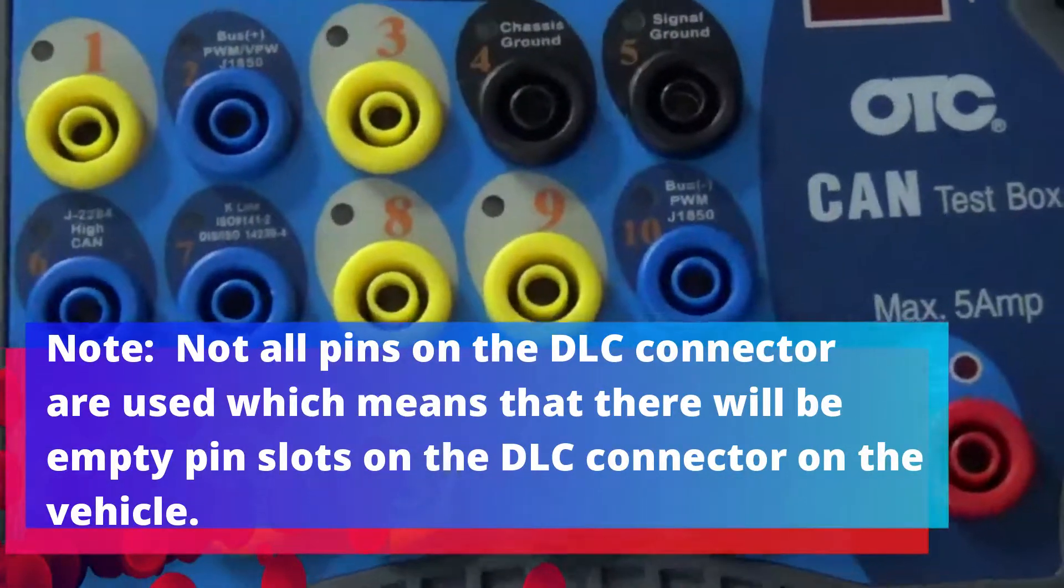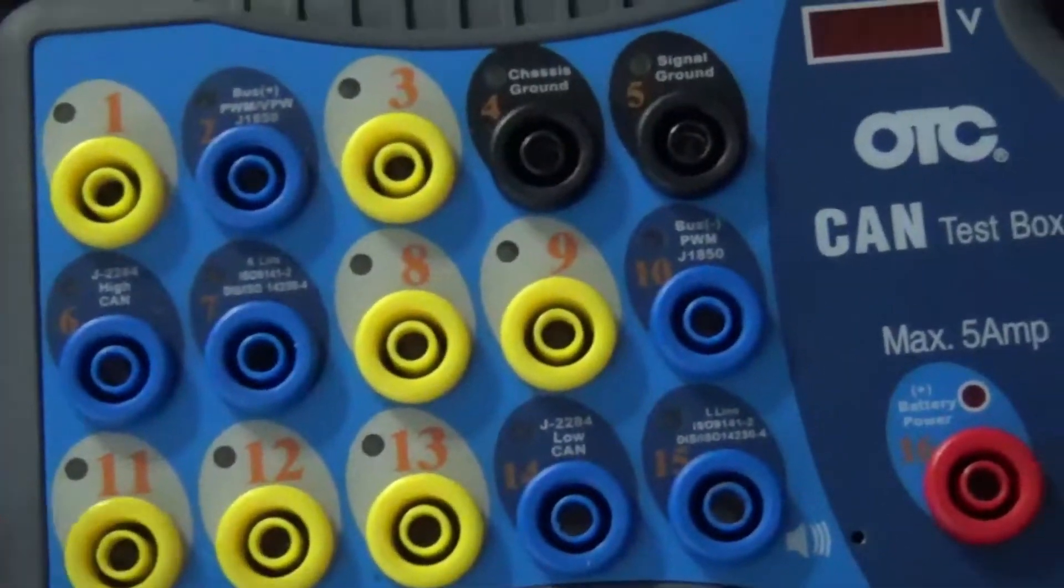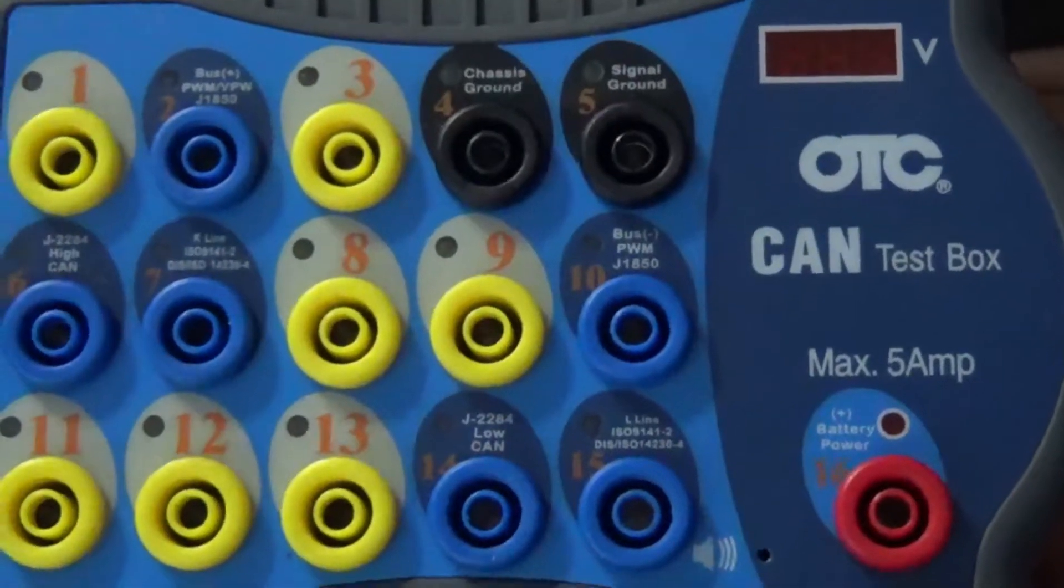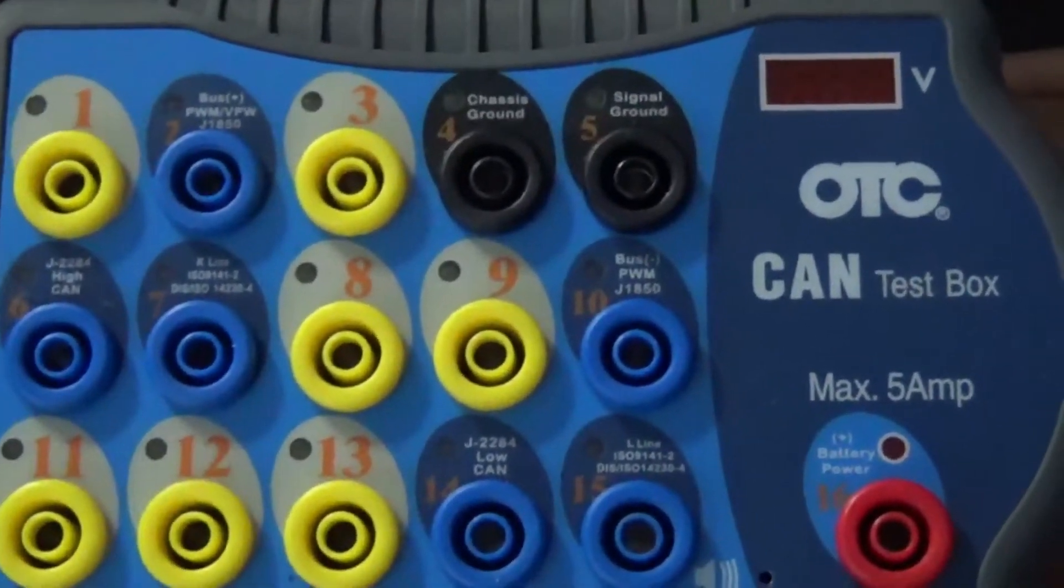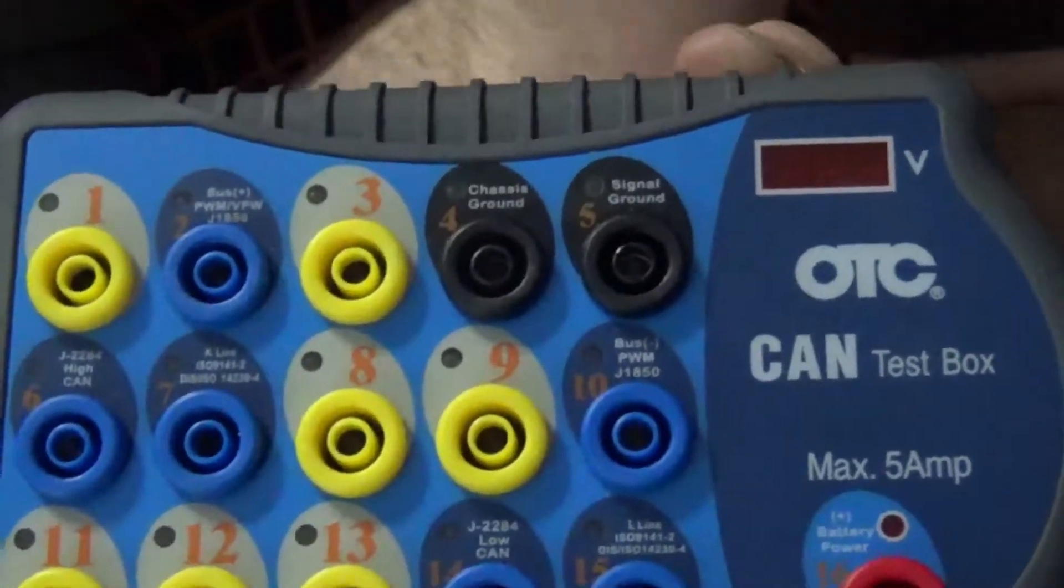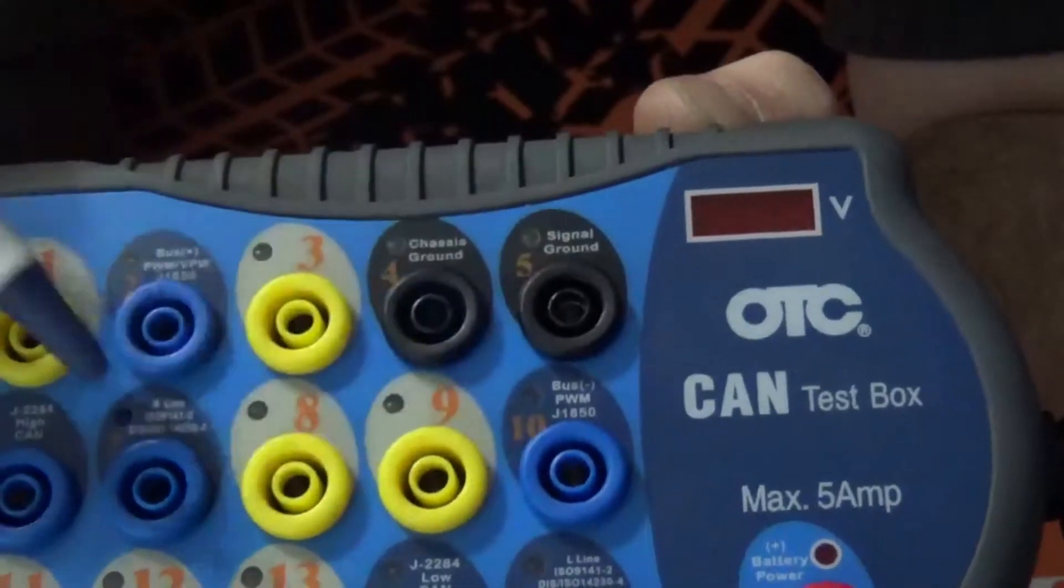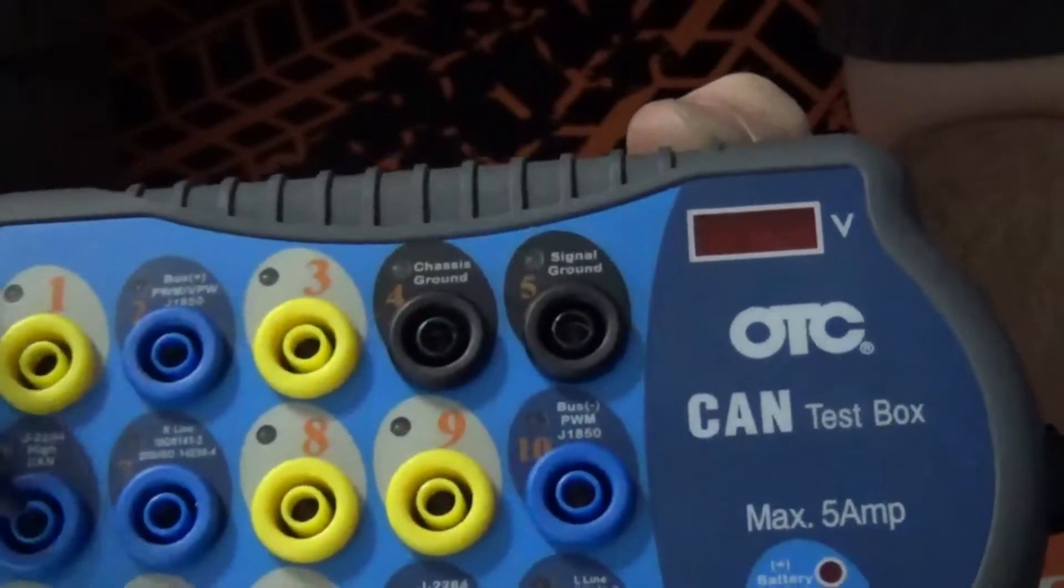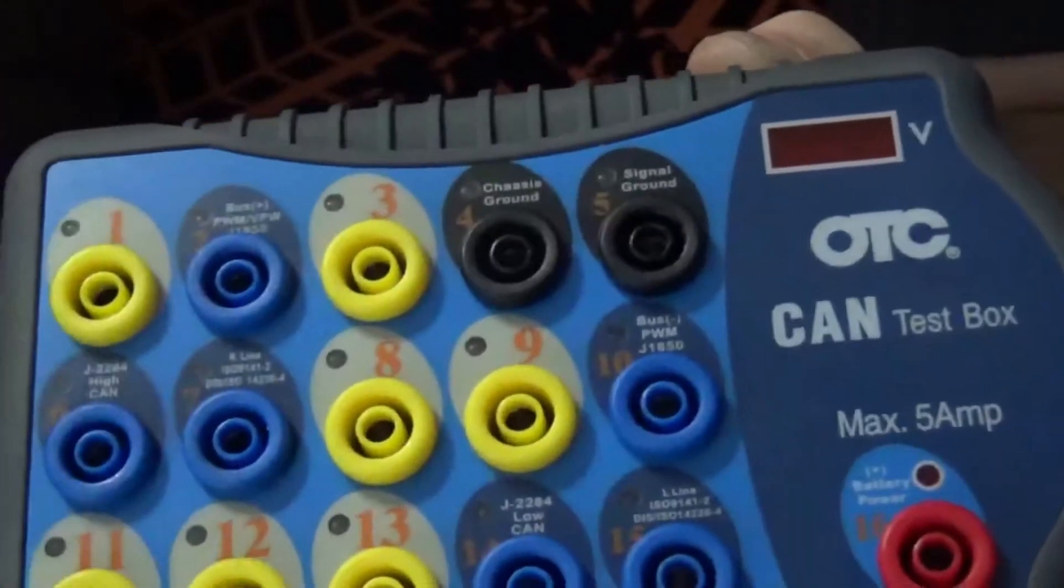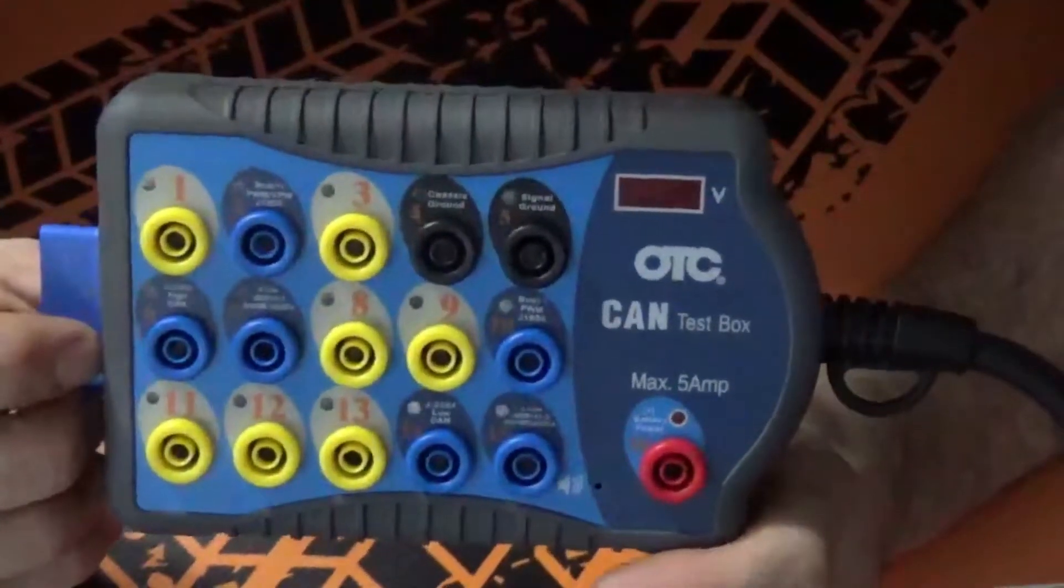So if you have a CAN communication fault and it says CAN high shorted to ground, let's just say, well then you could actually come here, plug up your DLC connector to the vehicle and you could actually come here and read your CAN high. So you would go CAN high and see if it is actually shorted to ground. And that's basically all a CAN breakout box is. There's not very much more to it.